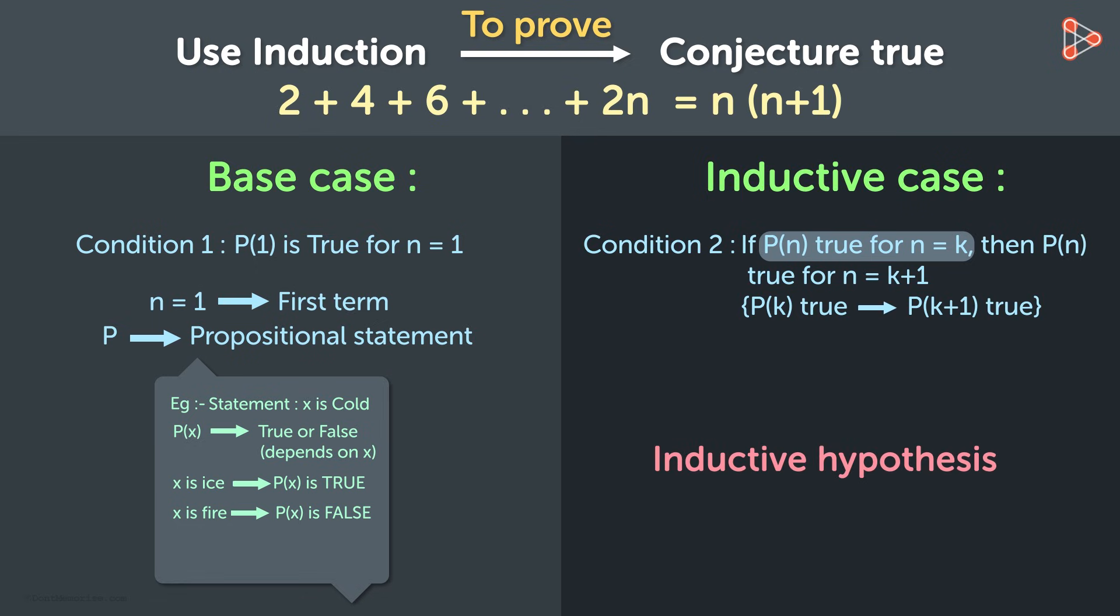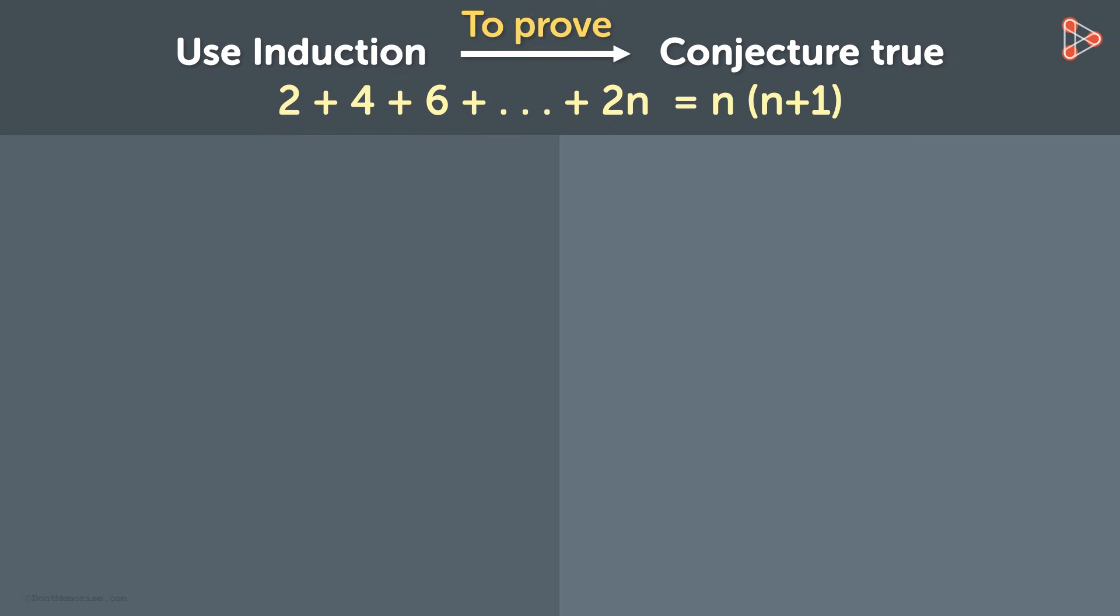To understand this better, we need an example. 2 plus 4 plus 6 up to 2n is equal to n multiplied by n plus 1. Let this be P of n. Now we will check the first condition. When n is 1, P of 1 has to be true.